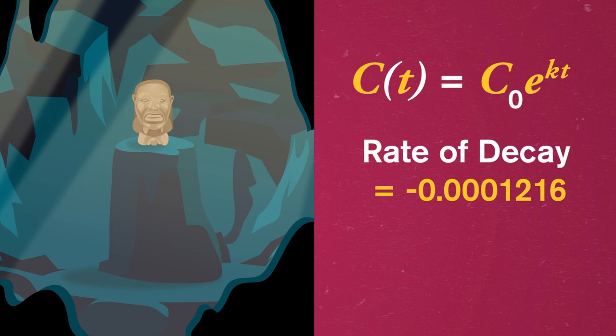And scientists have found that the rate of decay, or decrease, of carbon-14 is approximately negative 0.0001216. Plugging everything in our equation looks like 0.45 equals e to the negative 0.0001216 times t. If we get time out of the exponent and solve, we'd have a pretty solid guess on how old this artifact is.